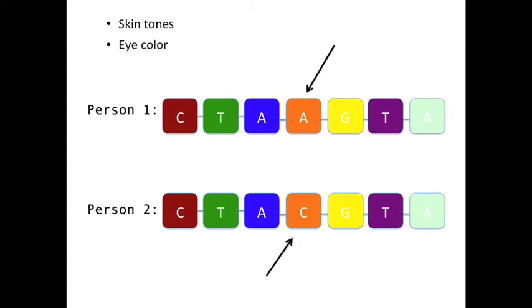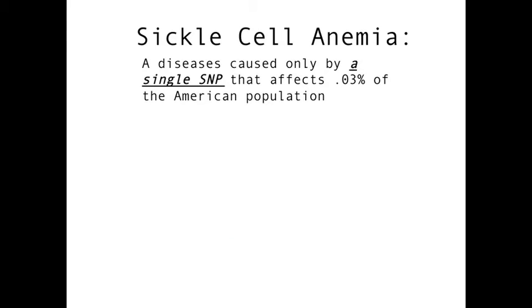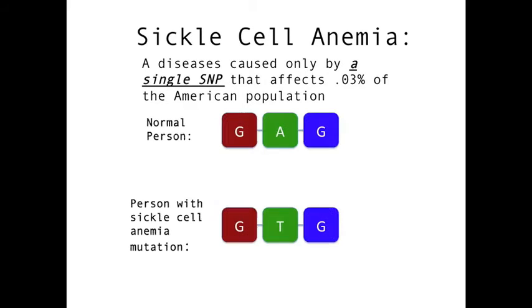But SNPs don't just affect the way we look. Take for example sickle cell anemia, a blood disease. Sickle cell anemia is caused only by a single SNP. 99.97% of the American population has an A at a specific location in their genome, but for the 0.03% that have a T in that same spot, those people have sickle cell anemia. So one SNP in the whole genome really can have a big effect on your life and your body.